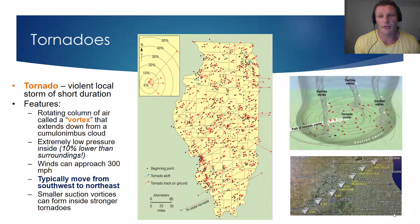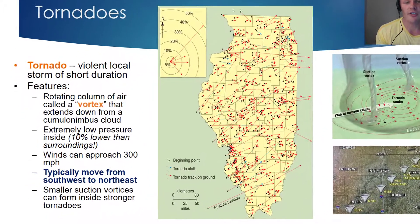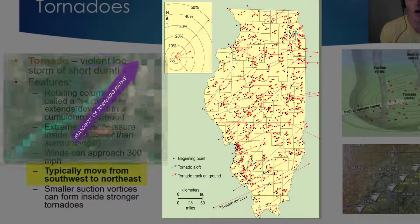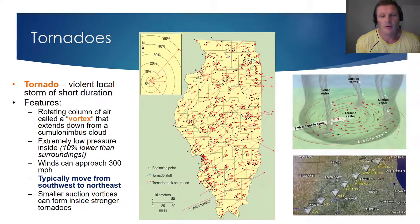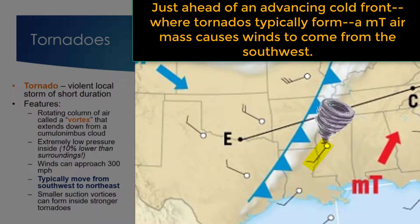Another very important feature regarding tornadoes is their typical path. Generally speaking, tornadoes will move from southwest to northeast. Shown on this map of Illinois are literally hundreds of different tornado paths, and the overwhelming majority of them are in the northeast direction. In fact, 50% of tornadoes will move in the northeast direction. Most tornadoes will occur slightly ahead of an advancing cold front, and with maritime tropical air masses, the winds tend to come from the southwest direction.